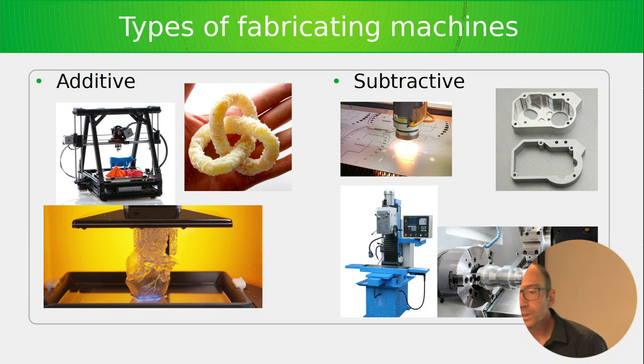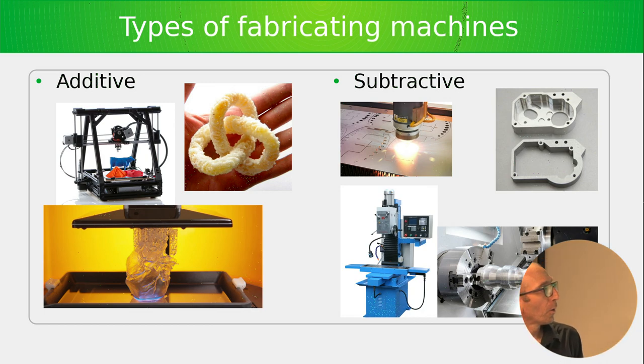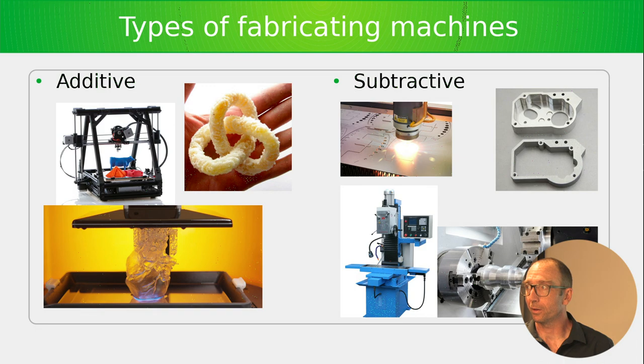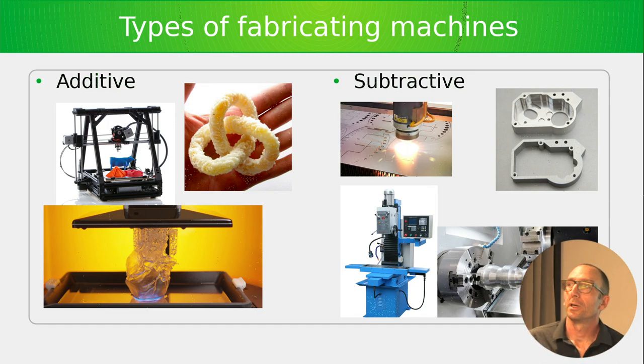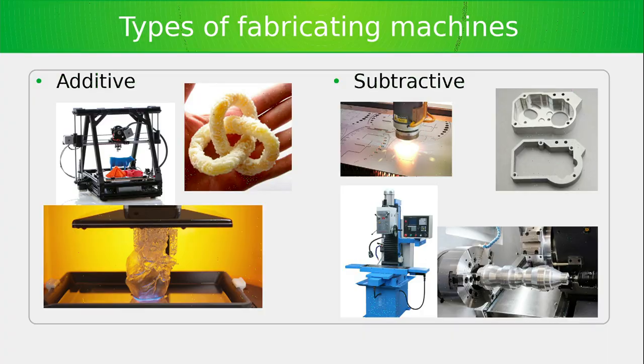Among these example machines, one is not like the others: this 3D printer uses a completely different software stack — it presents the entire layer of the 3D print at once as an image from a light projector. All the other machines work on a totally different technology, which is going to be the focus of this talk: G-code-based fabrication.